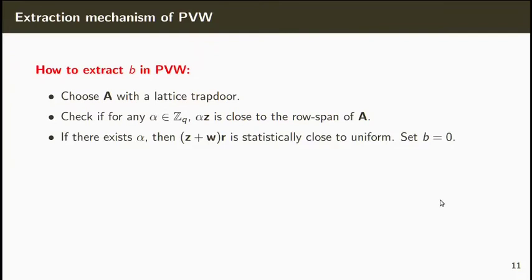If there exists such alpha, then Z plus W times R is statistically close to uniform and the reduction can set B equal to 0. On the other hand, if there is no alpha, then Z times R is the value which is statistically close to uniform and the reduction can set B equal to 0.